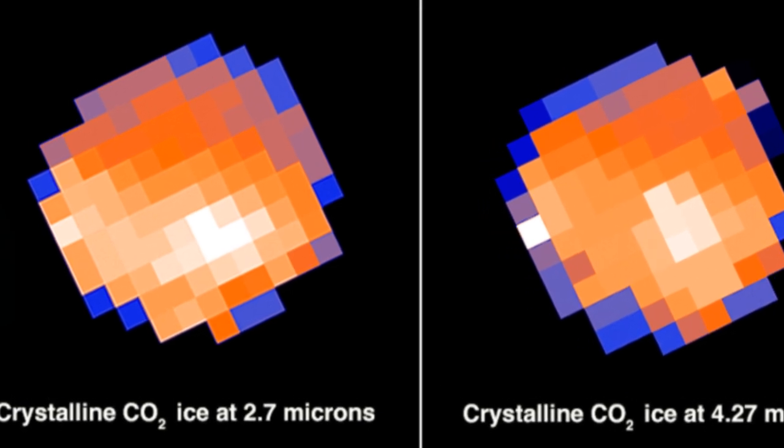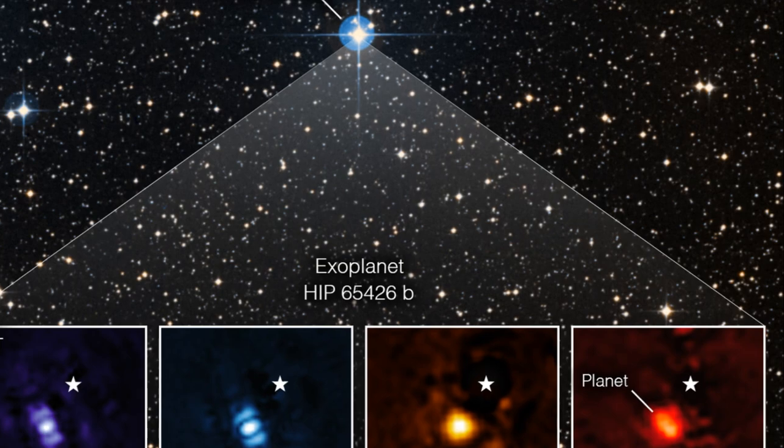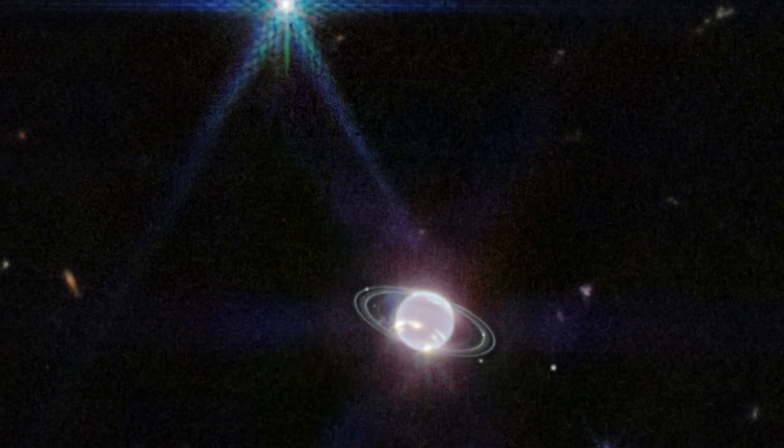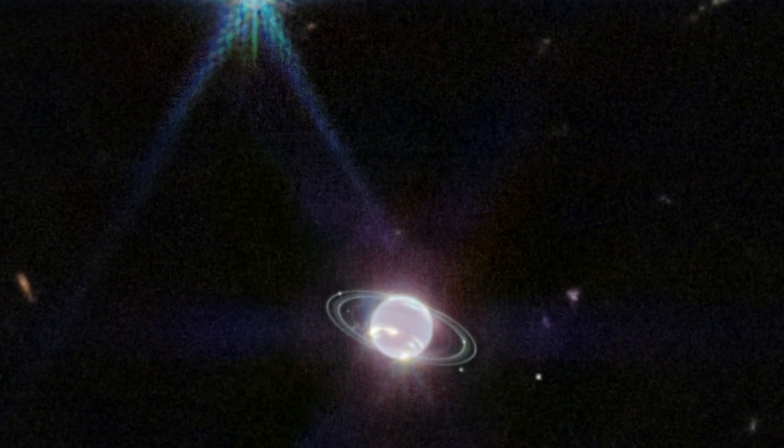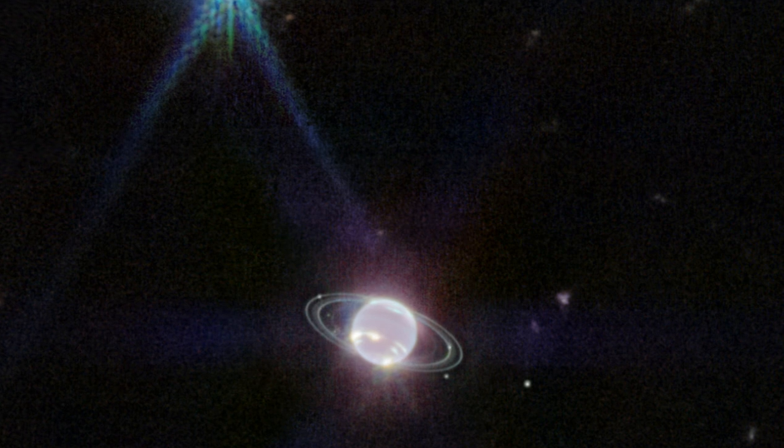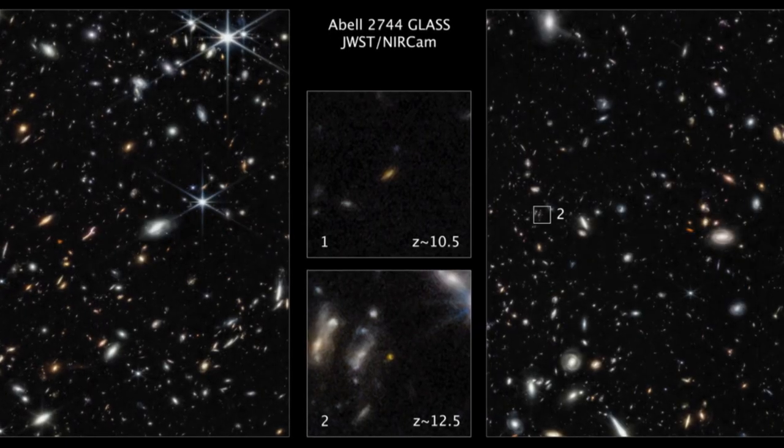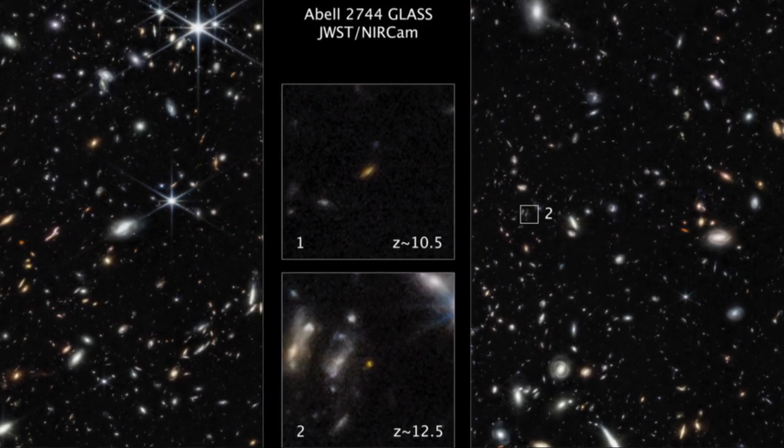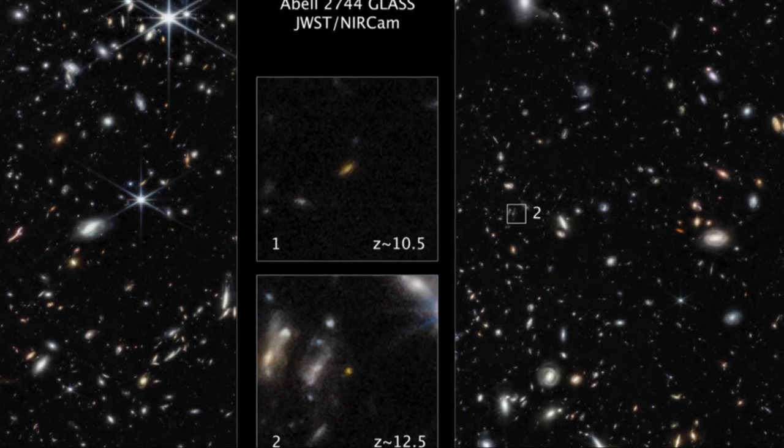This is where the James Webb Space Telescope comes into play. Equipped with state-of-the-art infrared technology, the JWST can detect this elusive light revealing a universe that was once shrouded in darkness. From distant galaxies to the birth of stars and even the elusive dark matter, the JWST brings them all into view. But why does this matter? Because these unseen aspects of the universe hold clues to our cosmic origins. The distant galaxies, for instance, offer a glimpse into the universe's past.